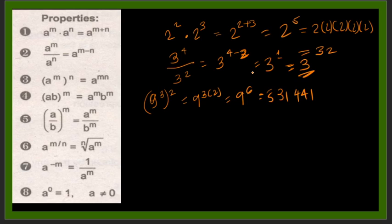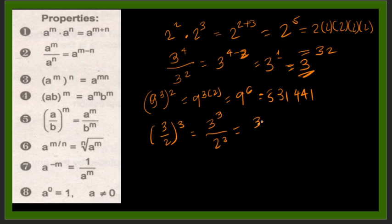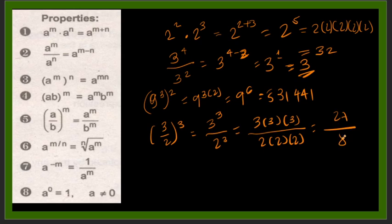Property 4: a over b, quantity raised to the power of m, equals a raised to the power of m over b raised to the power of m. For example, 3 over 2, raised to the power of 3, equals 3 to the 3rd over 2 to the 3rd, which is 3×3×3 over 2×2×2 — that is 27 over 8.